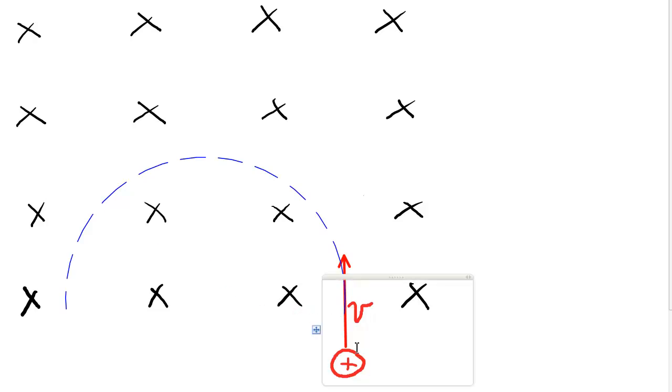I've got a charge down at the bottom moving with a velocity v, entering a uniform magnetic field. According to the right-hand rule, it will follow the semicircular blue path that I've outlined on the screen.